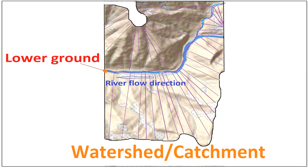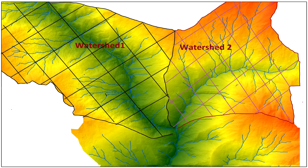In US usage, watershed is often termed as catchment. Catchment is the area from which surface water courses or a groundwater system derives its water. A surface catchment area may overlie an aquifer system, but they may be unconnected with the aquifer rock itself if there are intervening impermeable aquicludes.